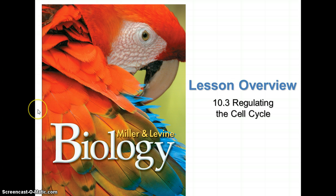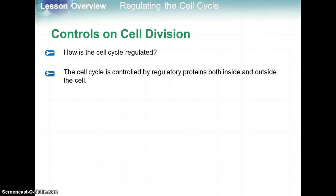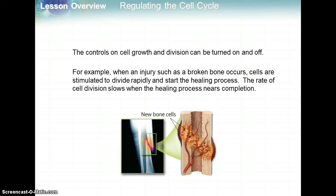We're going to continue now with section 10.3. We'll be covering 10.2 mitosis in class, so no additional notes needed for that. Section 10.3 covers regulating the cell cycle. The cell cycle is controlled by regulatory proteins both inside and outside the cell, and the controls on cell growth and division can be turned on and off. For example, when an injury such as a broken bone occurs, cells are stimulated to divide rapidly to start the healing process, and the rate of cell division slows when the healing process nears completion.